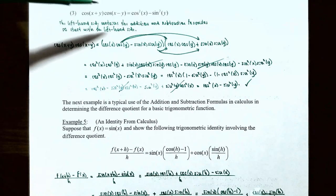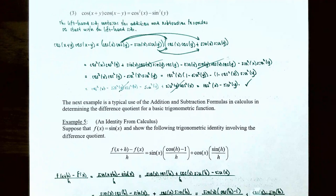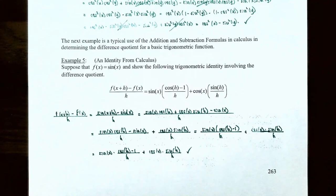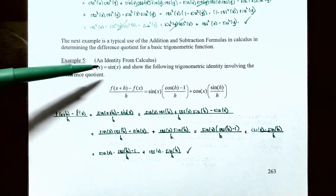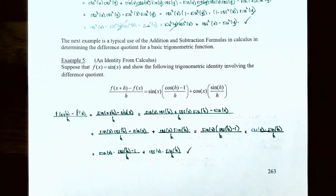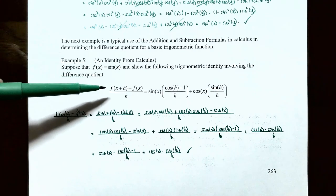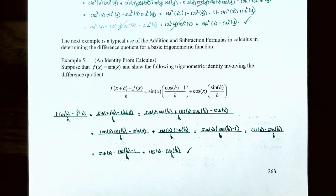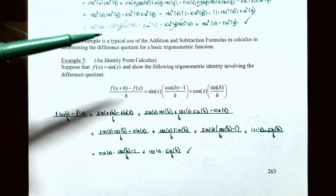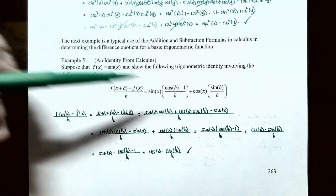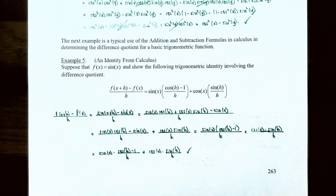We started with cosine of x plus y times cosine of x subtract y, used the addition and subtraction formulas for the cosine function, and arrived at cosine squared of x subtract sine squared of y. Now let's try something different. In example five, we're going to use the addition and subtraction formulas to determine the difference quotient for a basic trigonometric function — specifically an identity from calculus.